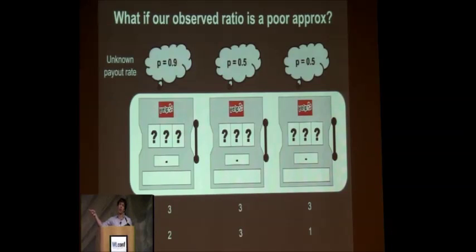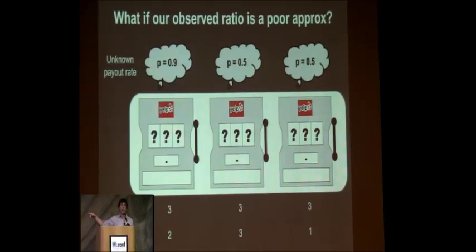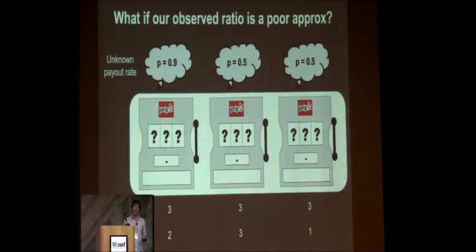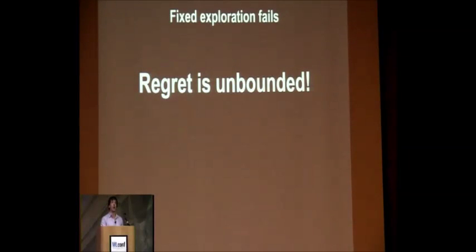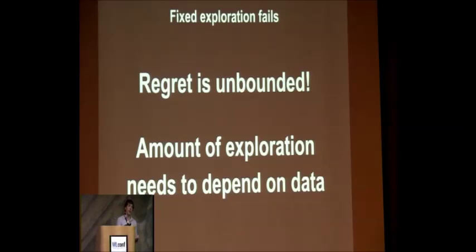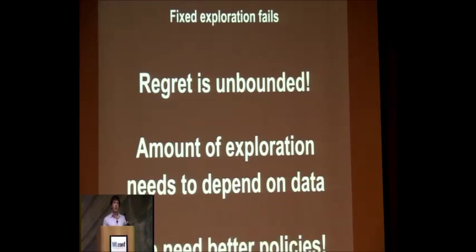But this could have been a different underlying system. Maybe we got really lucky with the middle one, and the one on the left is actually the best — we just got unlucky on one sample. Now when we hit the middle one over and over again, we'll have a lot of regret. If you only have ten things to run, sampling the wrong one on the tenth isn't so bad. But if you had a year to make as much money as possible, this unbounded regret hurts quite a bit. The amount of exploration needs to depend on the data coming in and the situation — we basically need better policies.